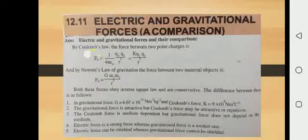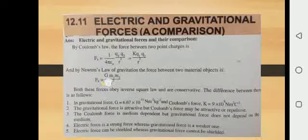When discussing electric force, the constant of proportionality is K. When discussing gravitational force, the constant of proportionality is capital G, which is known as the universal constant of gravitation.